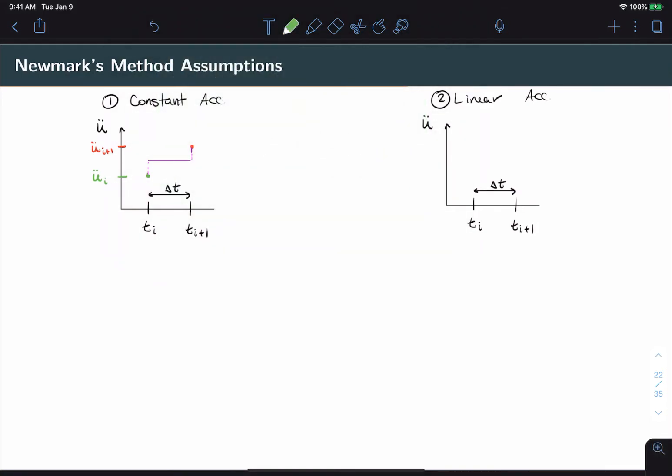In the linear acceleration case, the setup is exactly the same. We have a known acceleration at time i and we have an unknown acceleration at time i plus one. But in this case, as you might guess, the assumed acceleration is linear between the two points.